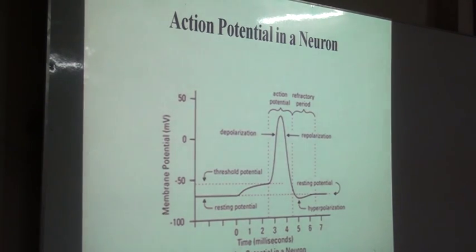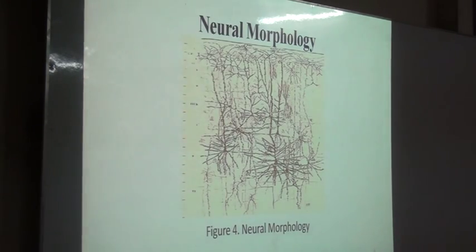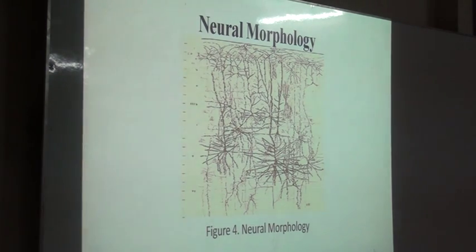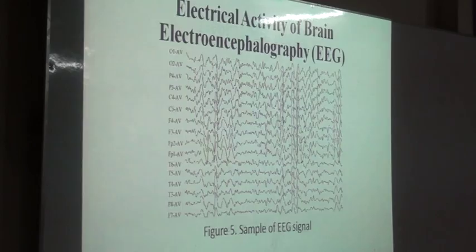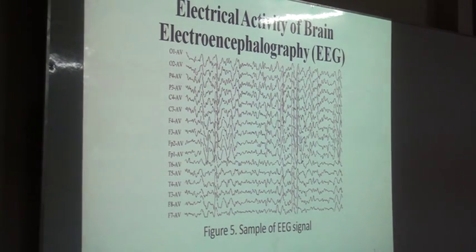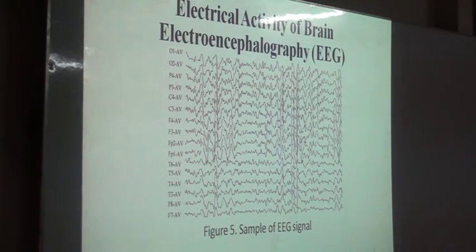If you want to have a look at the signal outcome from a single neuron, it is a simple electrical impulse, very easy to interpret. But the problem is that it is a true feature of the neural network of our nervous system. When we try to collect the electrical signal from our skull, it comes out as this much noise-like complex signal.